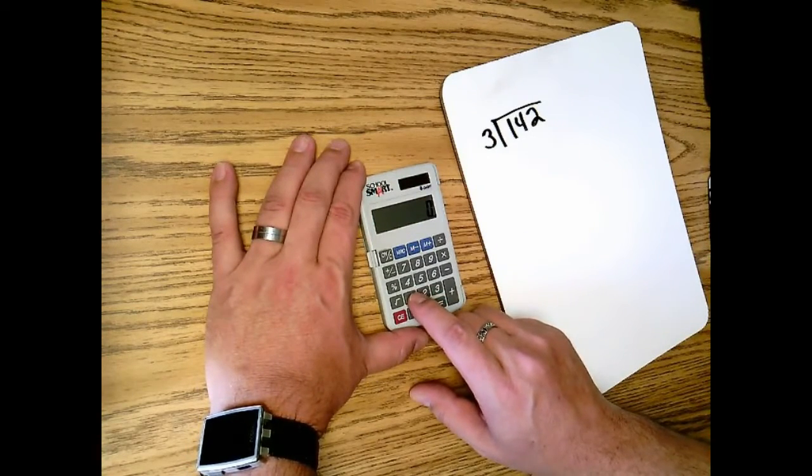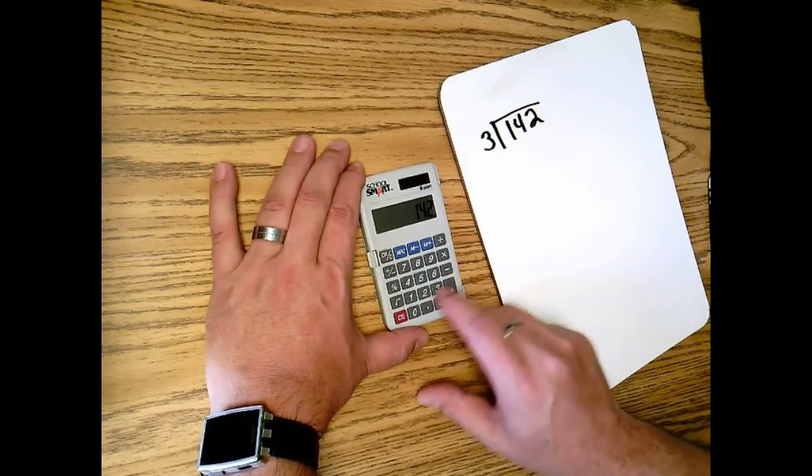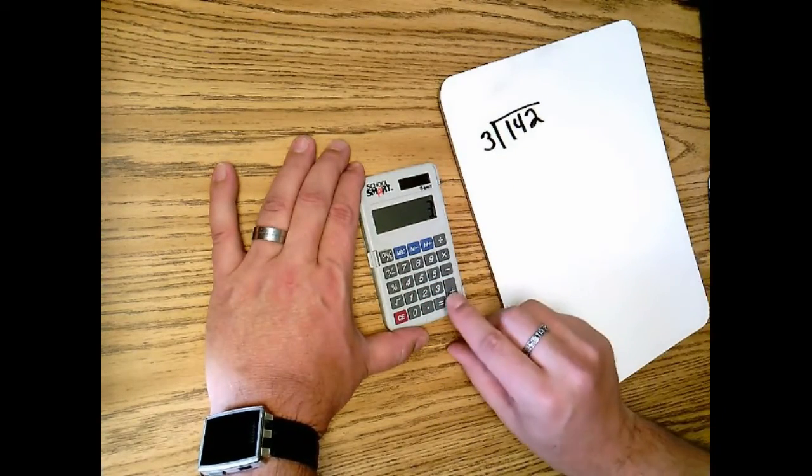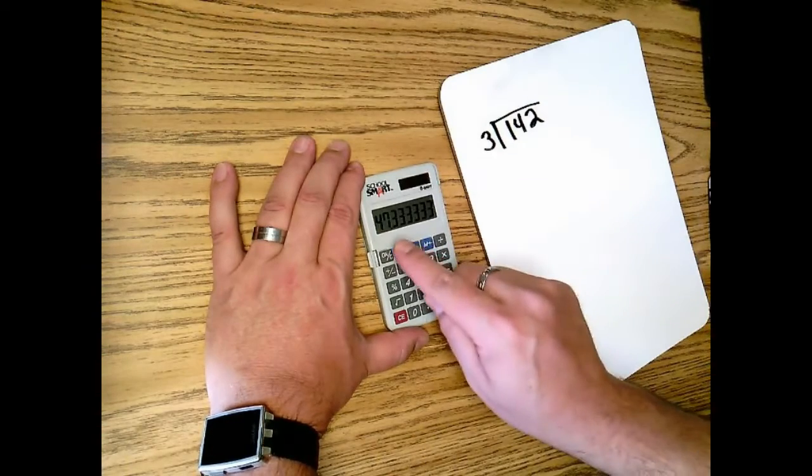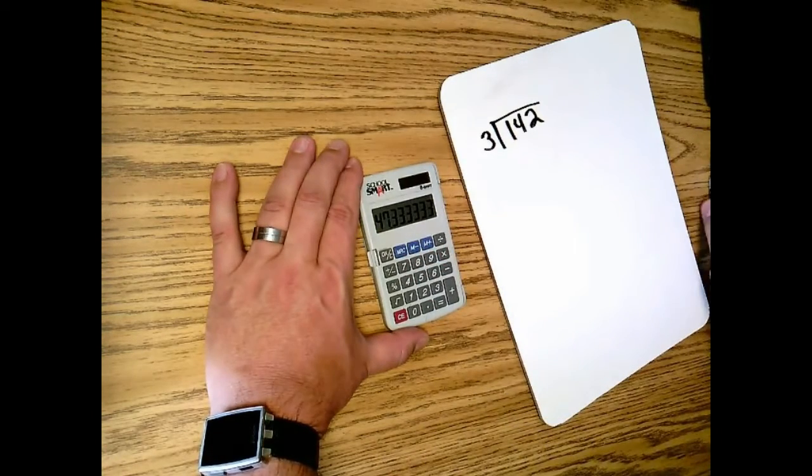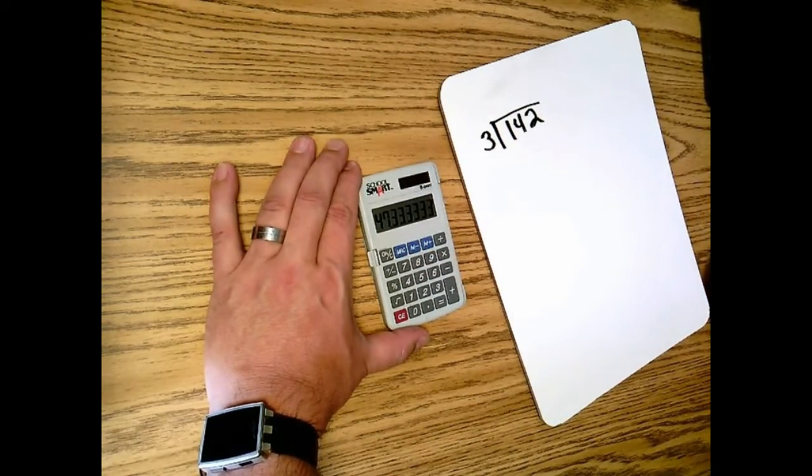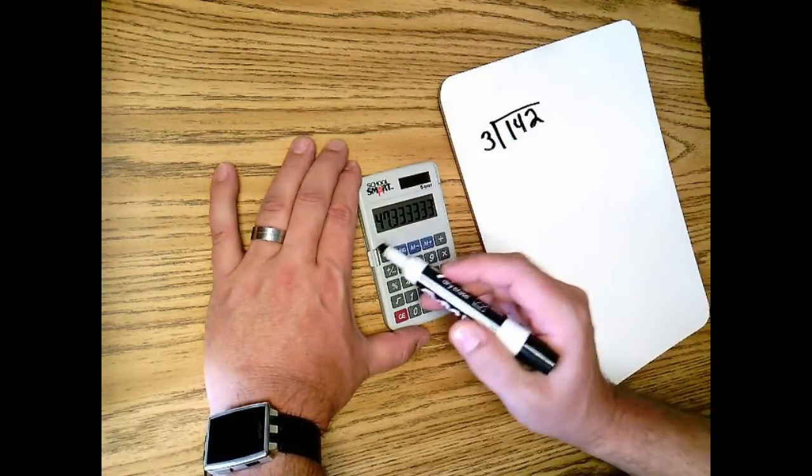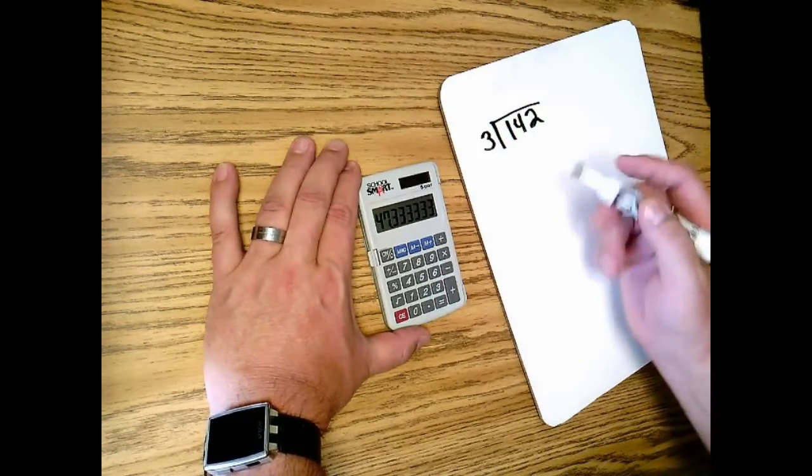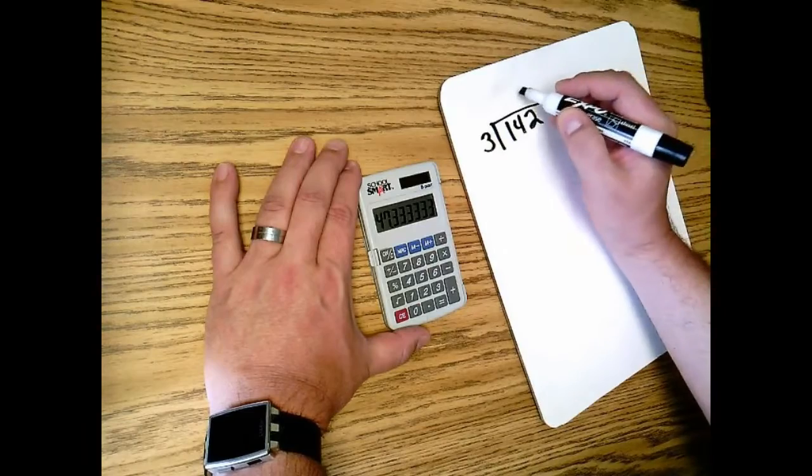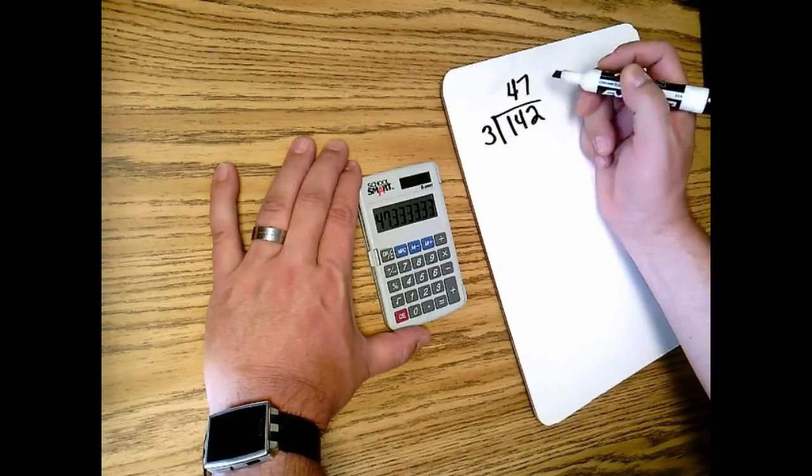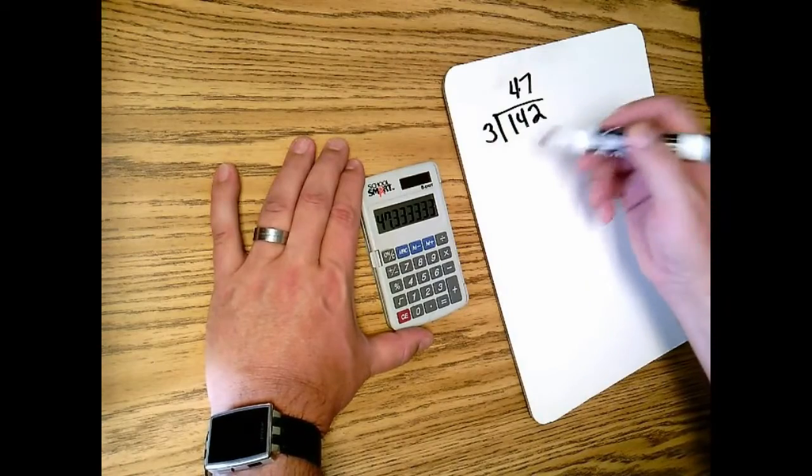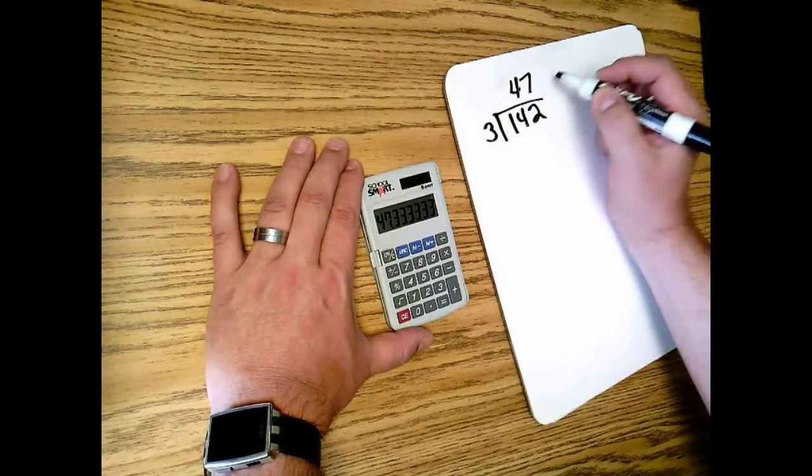So I'll type in 142 divided by 3. Of course my divisor is last, and then hit the equal sign, and you see how it gives me this repeating decimal. So what I can do is write down the whole number. Of course that's what's before the decimal. I could go ahead and write down 47. Now I can use the calculator to continue this. What I'm going to do to be able to find my remainder is I'm going to take 47, the quotient that I got, the whole number quotient, and I'm going to multiply that by 3, the divisor.